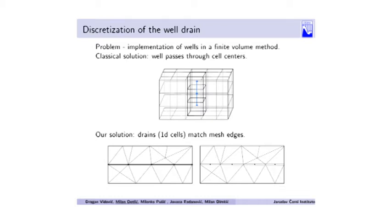The classical solution in both finite differences and in the finite volumes is that the drain passes through cell centers. On the other hand, in finite elements, the drain passes through mesh nodes.